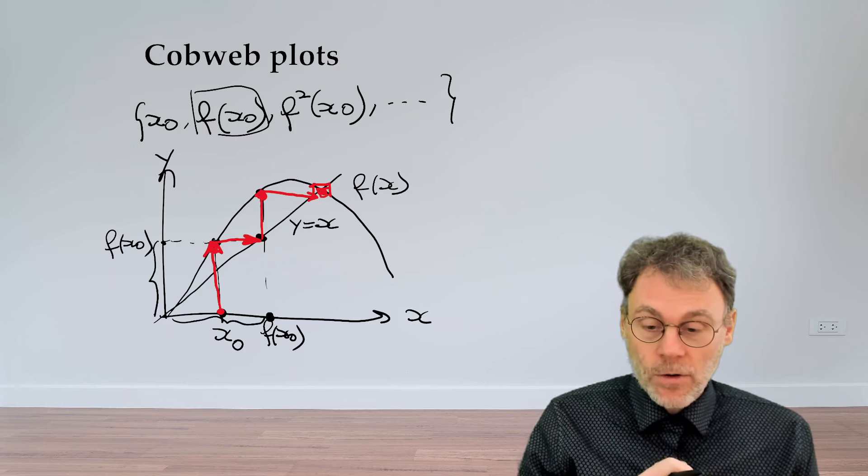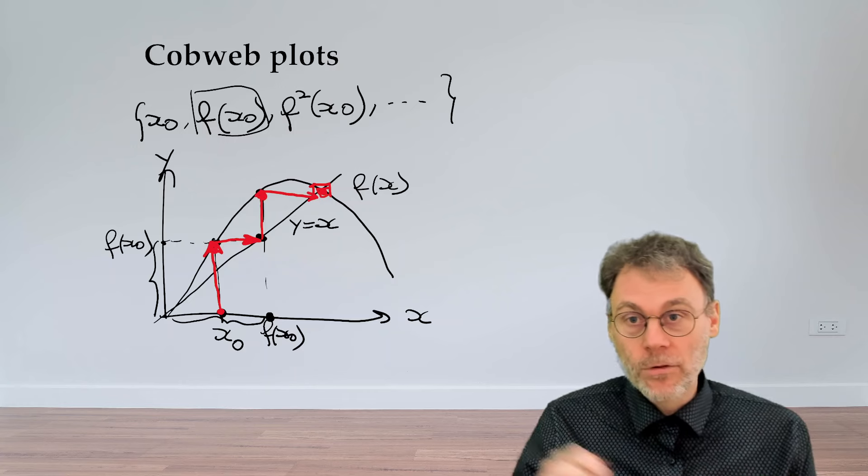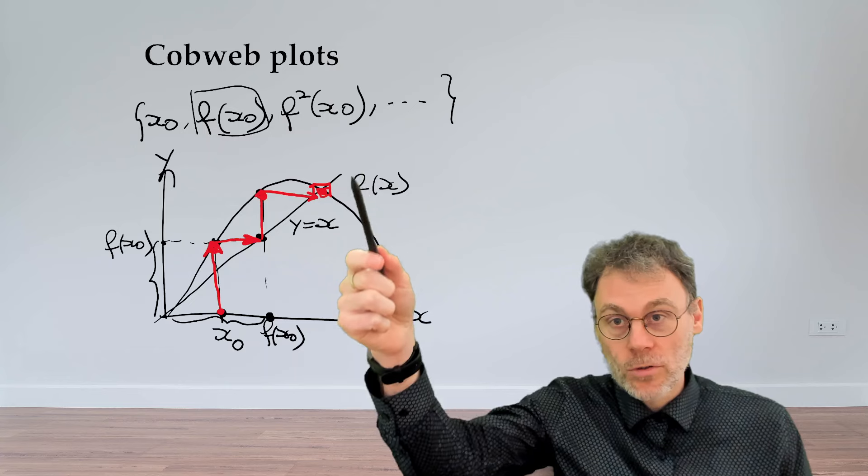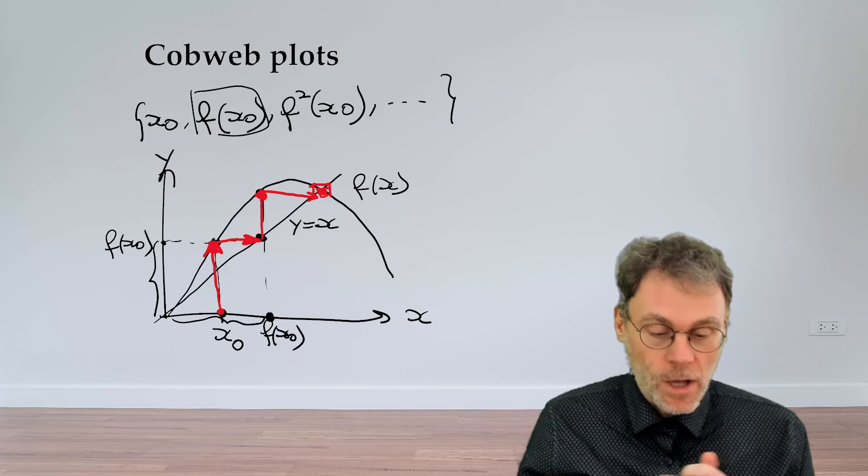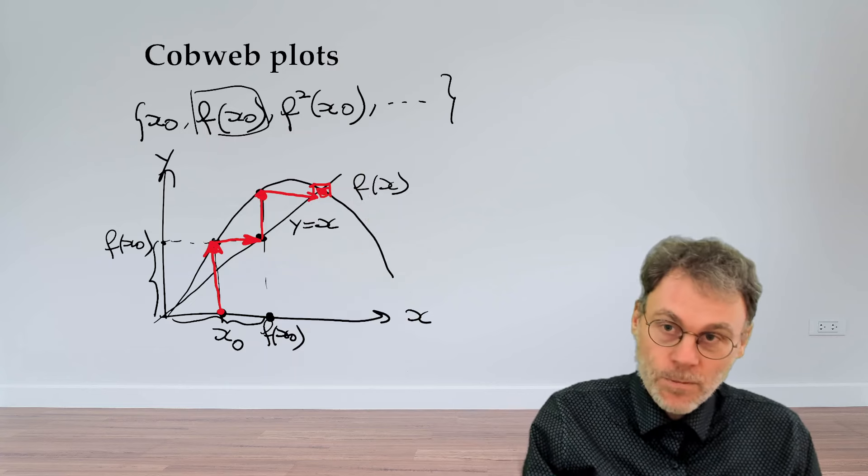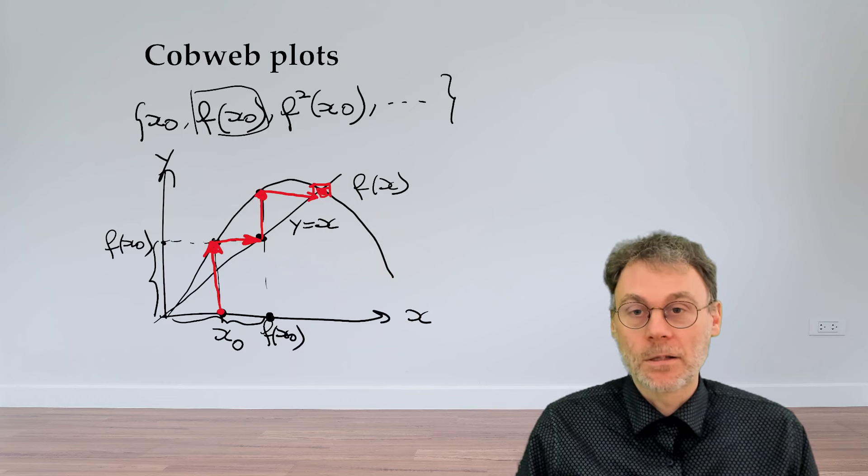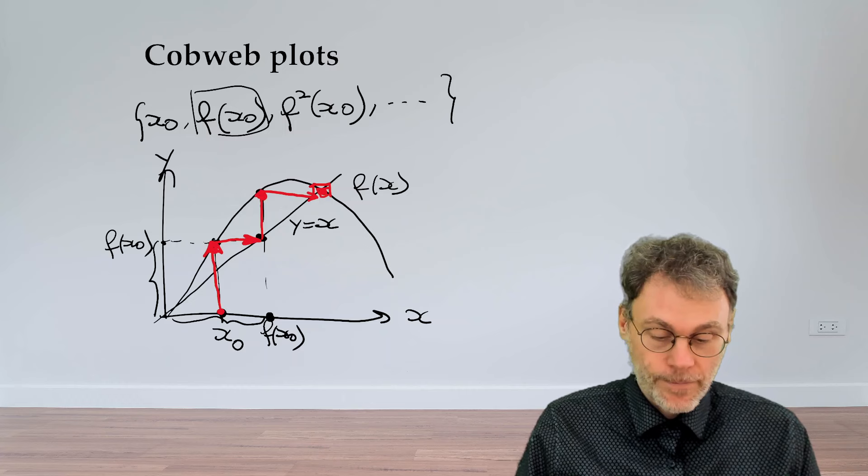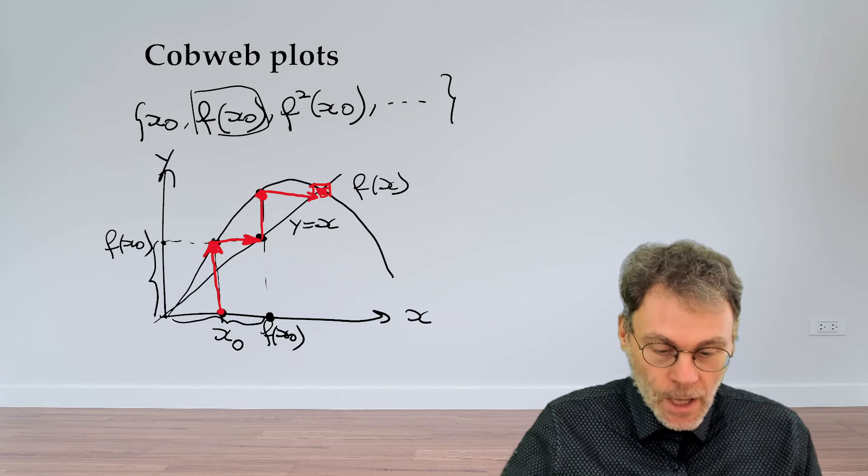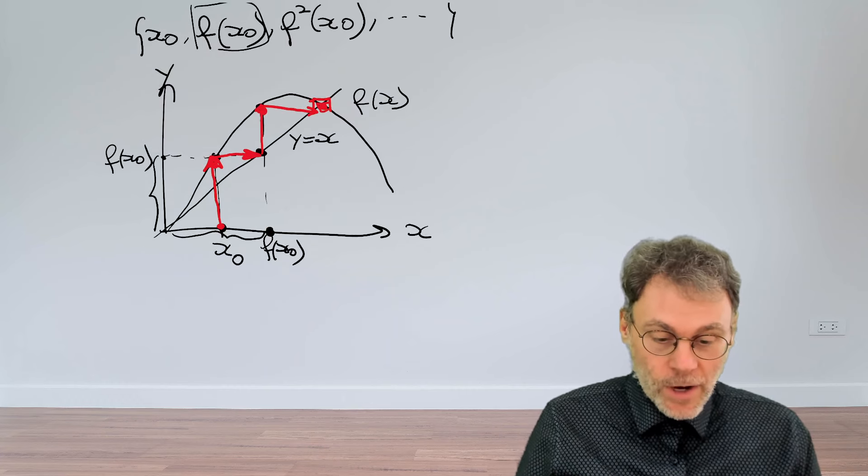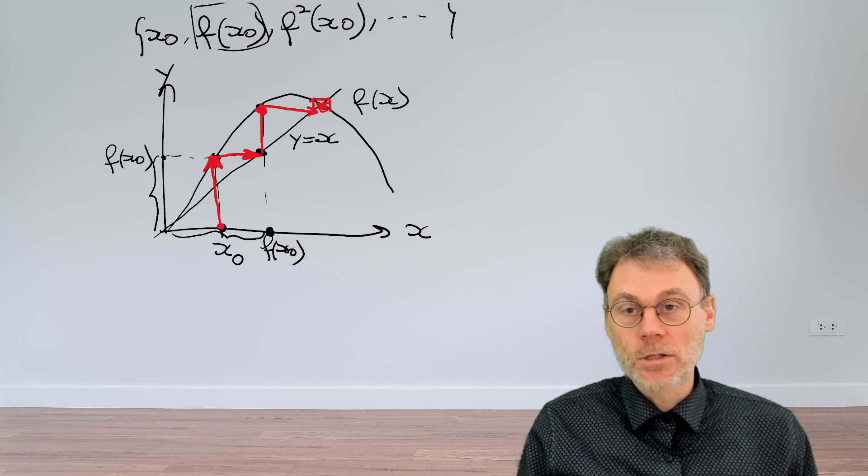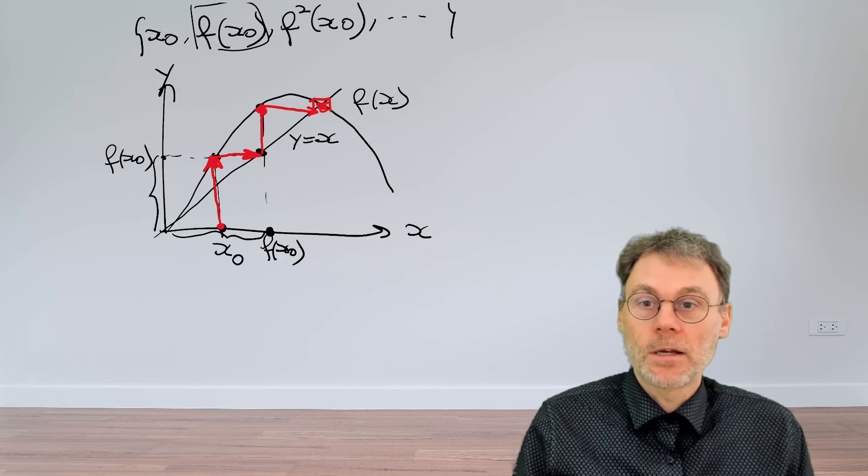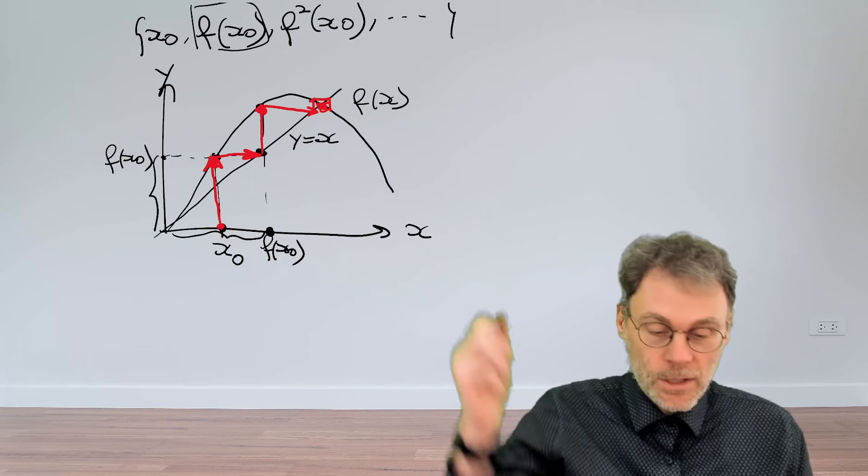The name of this diagram is a cobweb diagram. If you zoom in and what's happening here close to this limiting point here, you indeed see that you sort of spiral a little bit in the fashion of a cobweb here. So this is why it's called a cobweb diagram. What we can also see graphically is the point where you end up with is the intersection between these two lines.